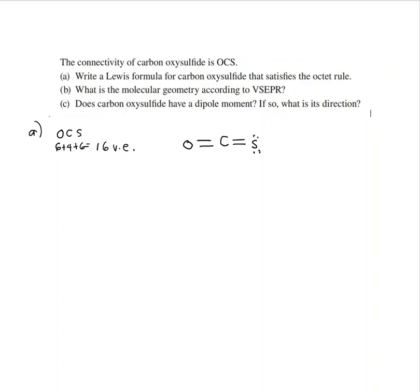Counting: 2, 4, 6, 8, 10, 12, 14, 16. Eight electrons around oxygen, eight around carbon, eight around sulfur. That is a valid Lewis structure.